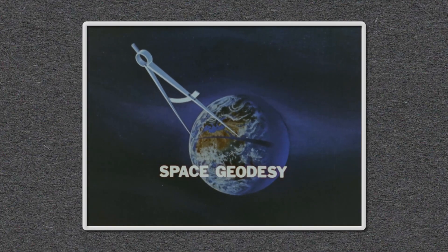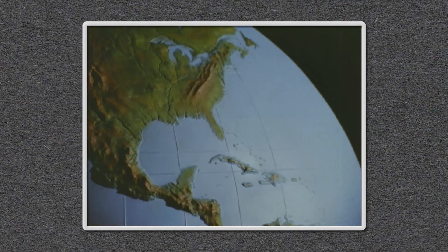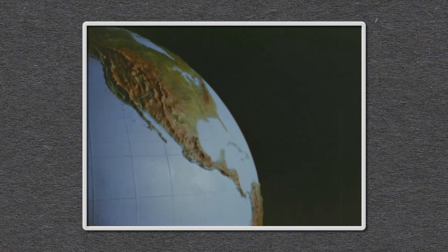Simply put, geodesy is the science of measuring and understanding the shape of the Earth, its orientation in space and gravity and how they change over time.